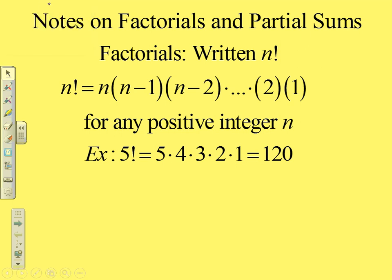In this lesson we're going to be looking at factorials and partial sums, but particularly factorials. A factorial is a way of multiplying descending numbers in order, and they're used in a lot of things that require large permutations or combinations. What we really need to understand is what a factorial is and how to evaluate one — essentially multiplying numbers in descending order.